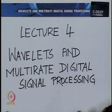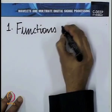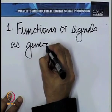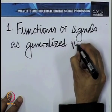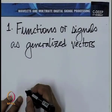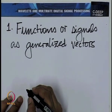To put our discussion in perspective, this is the fourth lecture on wavelets and multirate digital signal processing. What we intend to discuss in this lecture: first, I wish to talk about thinking of functions as generalized vectors. This idea is going to be useful to us in many different contexts in this course, and we need to understand this connection between functions or signals and vectors in depth.